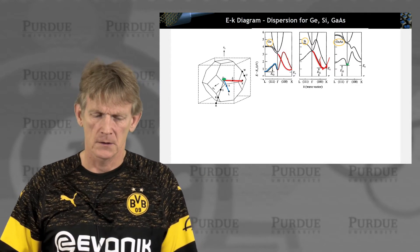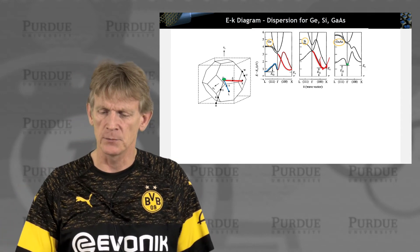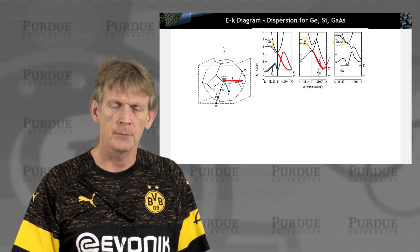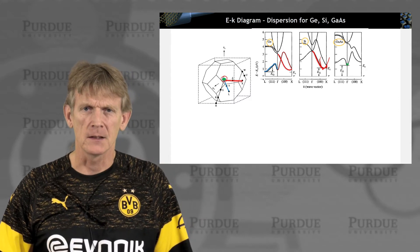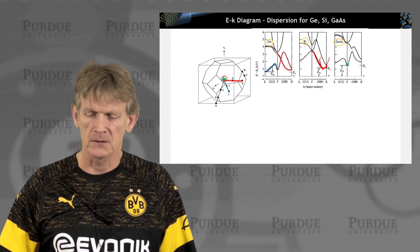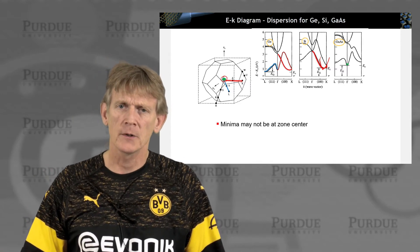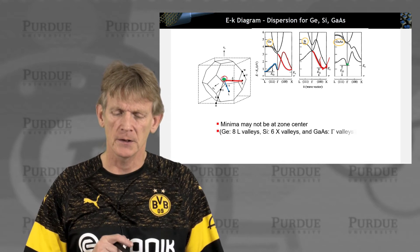Now gallium arsenide is in that sense very beautiful. It has its minimum point at gamma. So all of the critical information happens here at gamma. And we'll talk more about gallium arsenide and its very simple band structure in a few minutes.